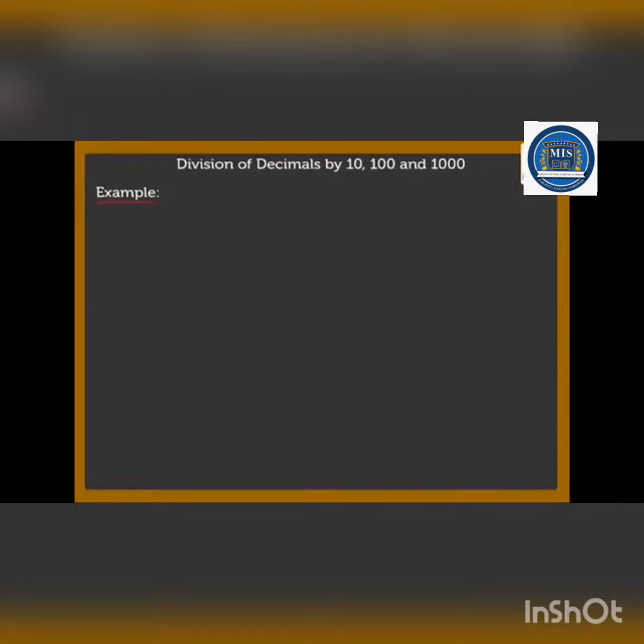We are taking the example 32.16. So when we divide a decimal by ten, we shift the decimal point one place to the left. So what will be the answer then? Yes, the answer will be 3.216.